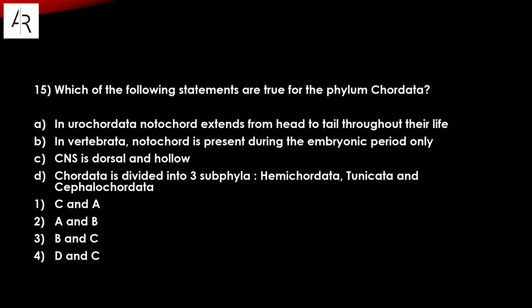Question number fifteen: which statements are true for phylum Chordata? In urochordates, notochord extends from head to tail throughout life — this is wrong. In vertebrates, notochord is present during the embryonic period only — correct. CNS is dorsal and hollow — correct. Chordata is divided into three subphyla: Hemichordata, Tunicata, and Cephalochordata — this is wrong. So B and C are correct — option number three.